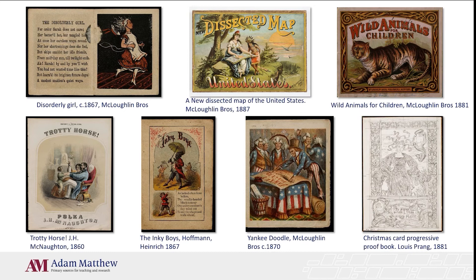The materials in the resource will be useful to a wide range of researchers at all levels. Undergraduates are going to find the material as accessible as experienced researchers will find it rich. Researchers and students from a number of different disciplines will find materials to support their work here. Social historians can discover the narratives and mores that have permeated culture to such an extent that children were introduced to them, such as gender roles, how to perceive communities of color, and developing ideas about nationhood.